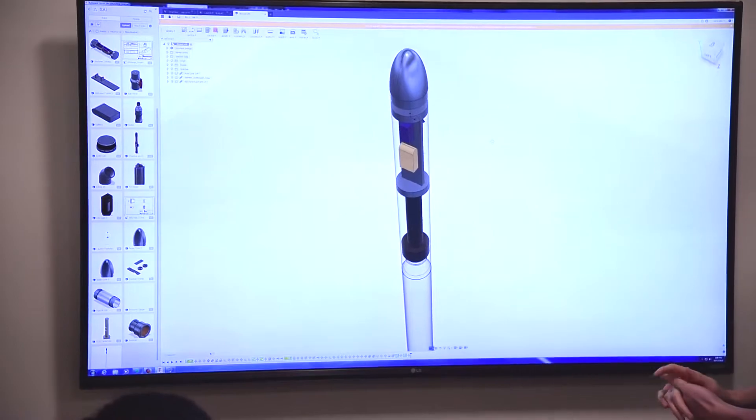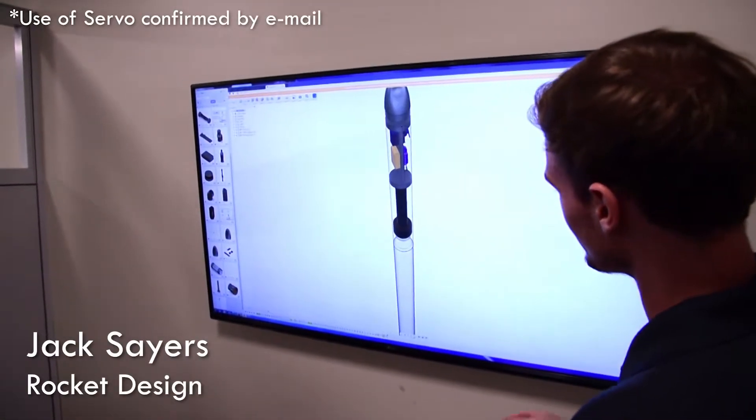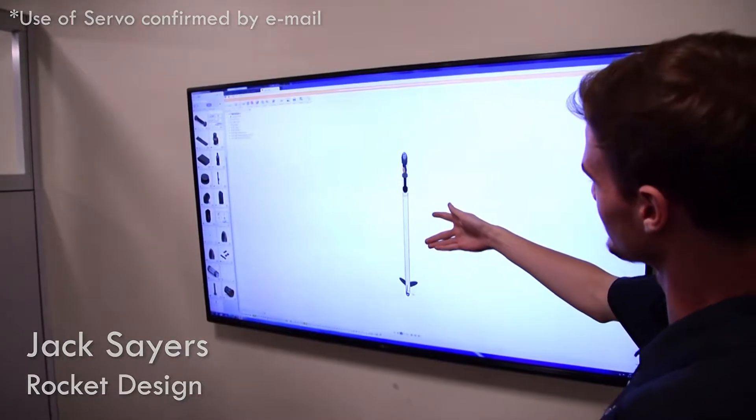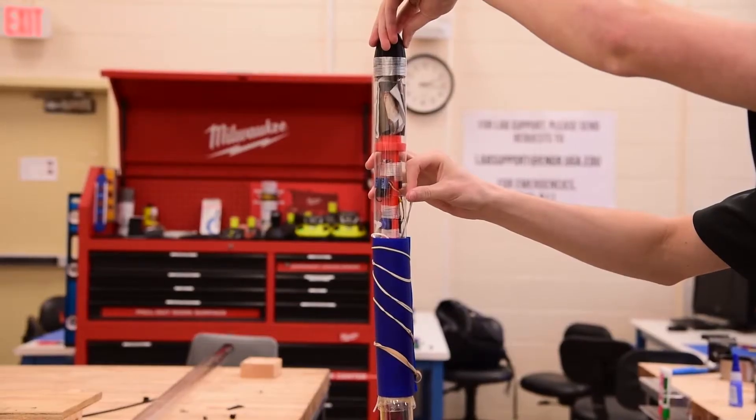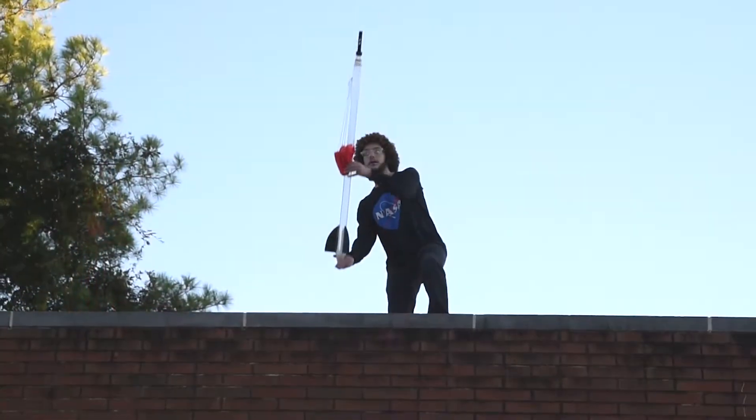The recovery system is composed of a barometric pressure sensor and a servo arm which detects when the rocket approaches apogee, at which point the parachute system is deployed. All of these components are held in place using 3D-printed parts.